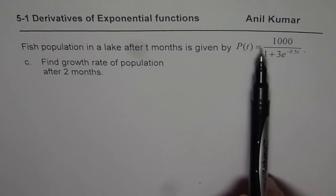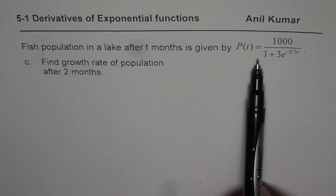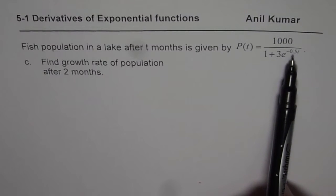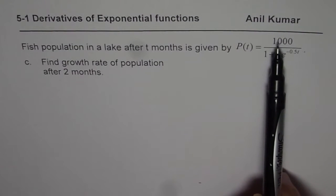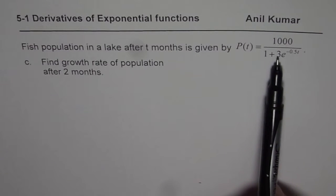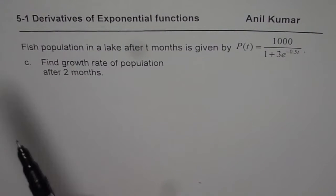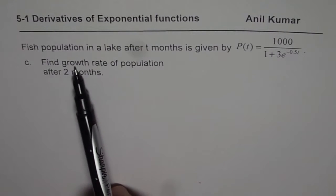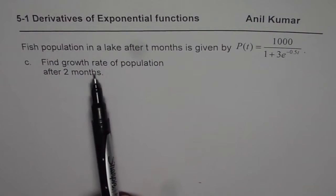We found that the maximum capacity is 1000, and at t equals 0 the number of fish to start with was 250 — one-fourth of 1000, that is 1000 divided by 1 plus 3. Now, here we have part c, which says: find the growth rate of the population after 2 months.